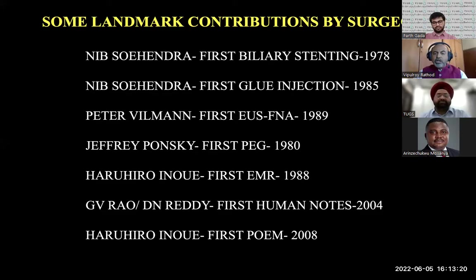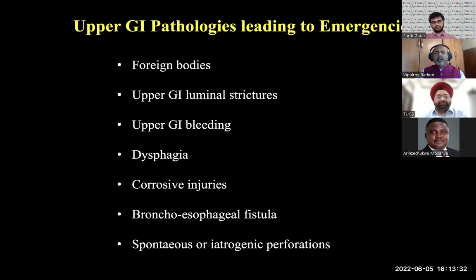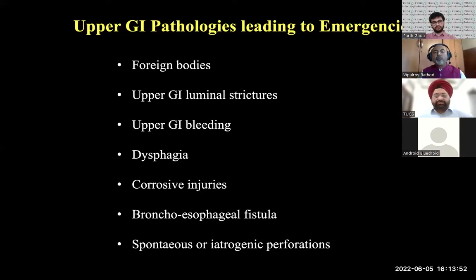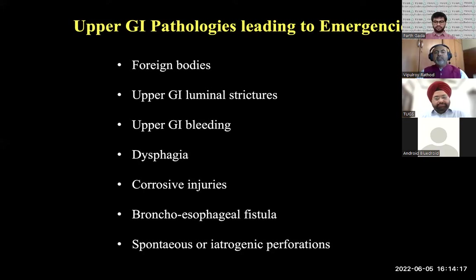I would not forget to mention Sidney Chung, a dear friend — probably one of the pioneers in non-variceal GI bleed, and also a surgeon. Coming to what pathologies can lead to GI emergencies: foreign bodies, GI luminal strictures, massive upper GI bleed, acute dysphagia, corrosive injuries, patients with spontaneous fistula formation, and spontaneous and iatrogenic perforations — including Boerhaave syndrome, diverticular perforation in the esophagus, spontaneous gastric perforation such as with gastric volvulus, and iatrogenic perforations which can also be managed endoscopically.